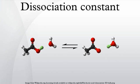For example, a ligand with a nanomolar dissociation constant binds more tightly to a particular protein than a ligand with a micromolar dissociation constant.